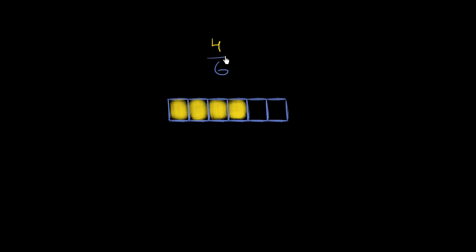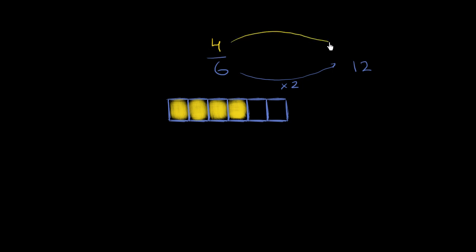So let's think about that. Let's say we multiply the denominator here by 2. I'm claiming that as long as we multiply the numerator by 2, we're going to get an equivalent fraction. So here, the denominator was 6, so our denominator will be 12. If our numerator here is 4, we've got to multiply by 2 again — multiply our numerator by 2 to get 8.